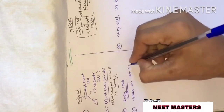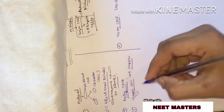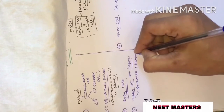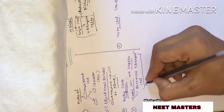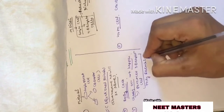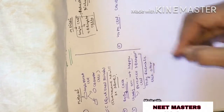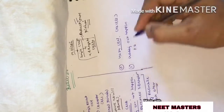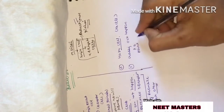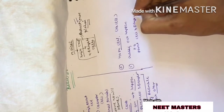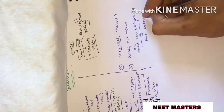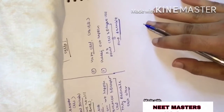Third difference: crossing over. In mitosis, crossing over does not occur, and the daughter cells resemble the parent cells. In meiosis, crossing over does happen, so the parent cells and daughter cells do not resemble each other.